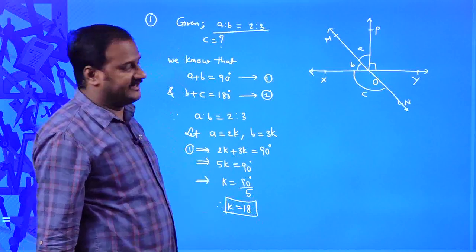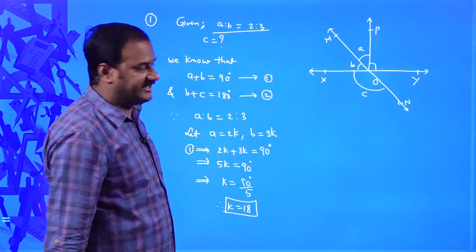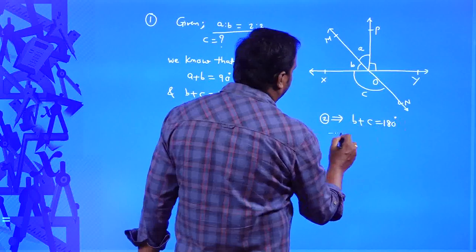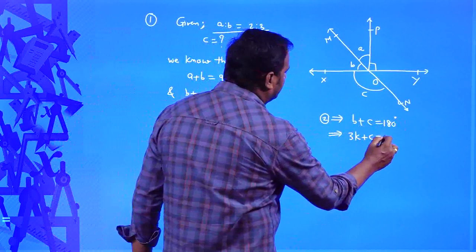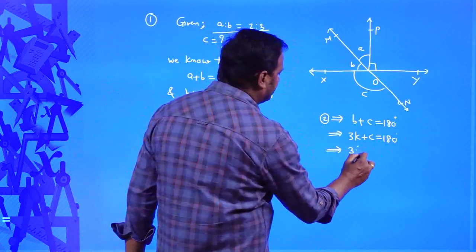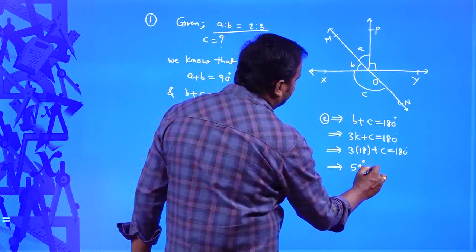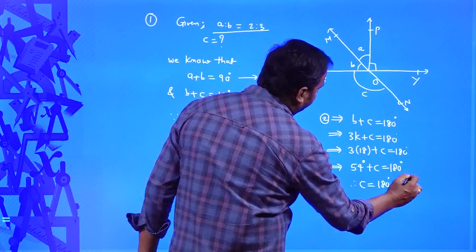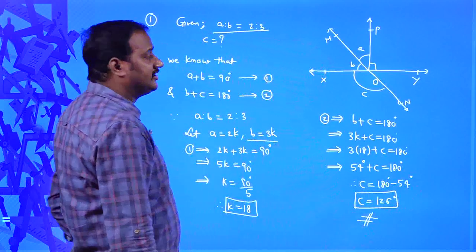After finding k equals 18, we need to find angle C. We had the relation B plus C equals 180 degrees. Since B equals 3k, we write 3k plus C equals 180 degrees. Since k equals 18, we get 3 times 18 plus C equals 180 degrees, so 54 degrees plus C equals 180 degrees. Therefore C equals 126 degrees. This way you can easily solve this kind of problem.